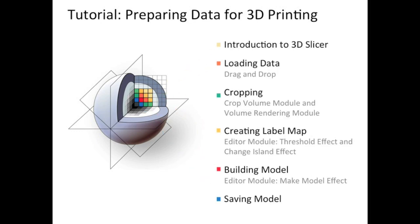We'll start with an introduction to 3D Slicer for those of you who have never seen the interface before. Then I'm going to load data into Slicer using drag and drop. After that, I'm actually going to crop down my cone beam CT to a sub volume that contains only the region that I'm interested in. Afterwards, I'll use the editor module to create a label map in which I segment out the bone part of that sub volume, because I want my 3D printed model to only represent the bone. Then I'm going to create a surface model within Slicer from that label map, and save it in a file format that's compatible with my 3D printer.